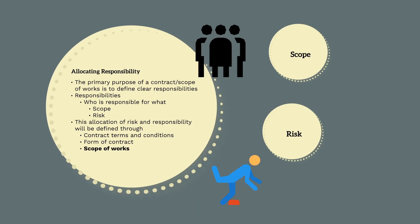Now that we're familiar with what's contained in the scope of works and what documents are referenced, let's look at the primary purpose of the scope of works. The primary purpose is to clearly allocate responsibility to the subcontractor. This responsibility consists of both scope and risk. In addition to the scope of works, we will define this responsibility through the form of subcontract chosen and the contract terms and conditions.